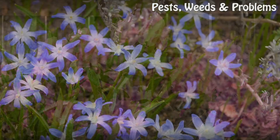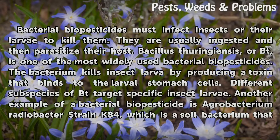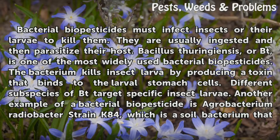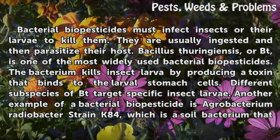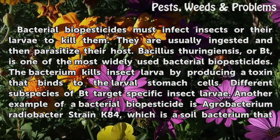Bacterial Biopesticides. Bacterial biopesticides must infect insects or their larvae to kill them. They are usually ingested and then parasitize their host. Bacillus thuringiensis, or Bt, is one of the most widely used bacterial biopesticides. The bacterium kills insect larvae by producing a toxin that binds to the larval stomach cells.